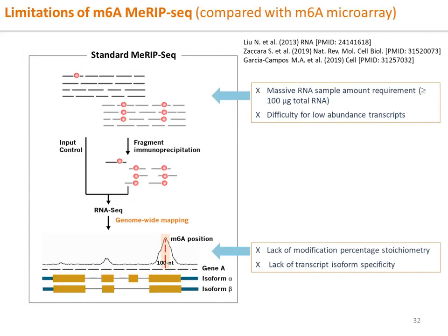Methylated RNA immunoprecipitation sequencing, or MeRIP-seq, has been used for m6A profiling. However, it has many limitations. It cannot profile the modification stoichiometry or percentage of modification. It is also difficult to profile m6A modification to specific transcript isoforms due to the generally low sensitivity of transcript-specific profiling by RNA sequencing. Furthermore, MeRIP-seq requires massive amounts of RNA — greater than 100 micrograms — which is not practical under many circumstances.